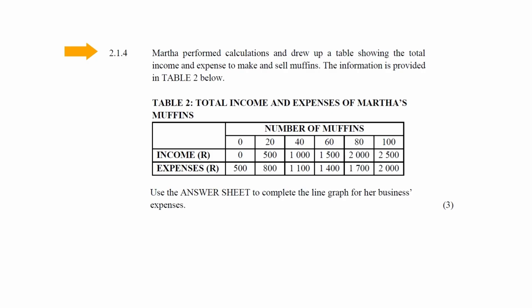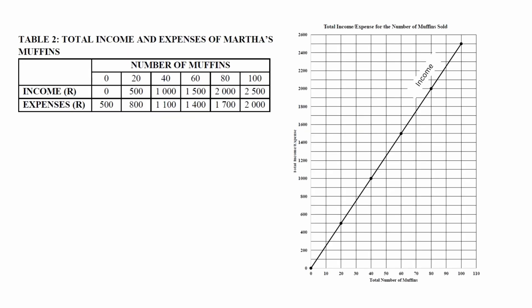In Question 2.1.4, it is stated that Martha performed calculations and drew up a table showing the total income and expenses to make and sell muffins, provided in Table 2. You are instructed to use the answer sheet to complete the line graph for her business expenses. The line graph for income has already been constructed. To draw the expenses line graph, first plot the points from the table, then join the dots to form the straight line graph.